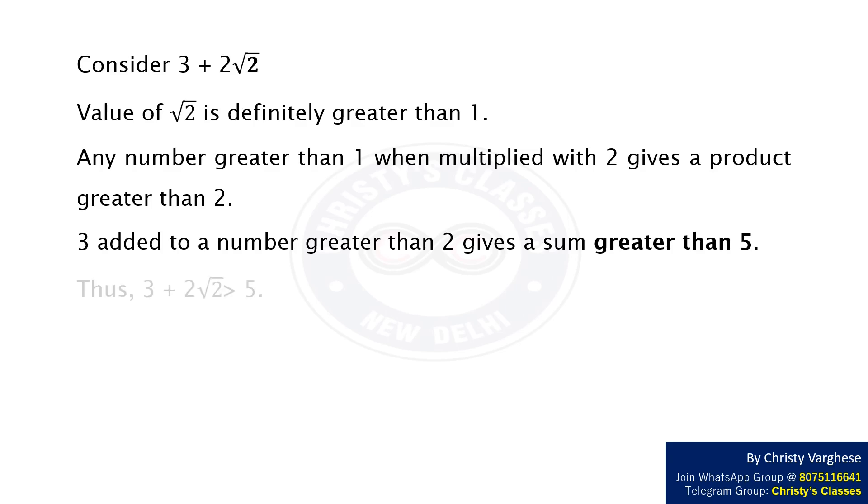Thus 3 + 2√2 is greater than 5. That is (1 + √2)² is greater than (√5)², which implies 1 + √2 is greater than √5. Thus we can eliminate options B and D.